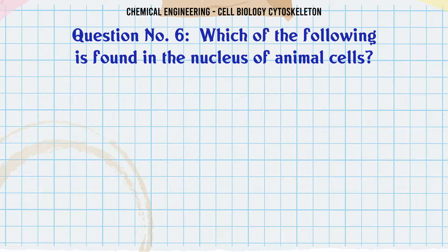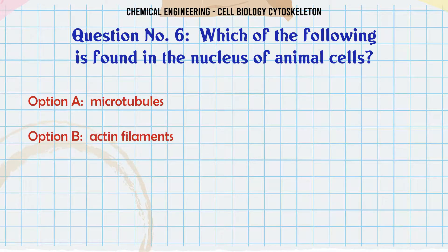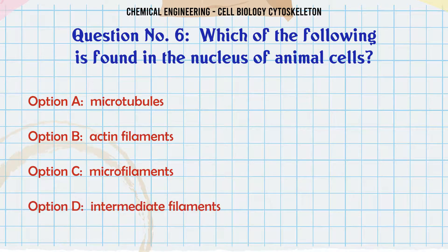Which of the following is found in the nucleus of animal cells? A. Microtubules, B. Actin filaments, C. Microfilaments, D. Intermediate filaments.